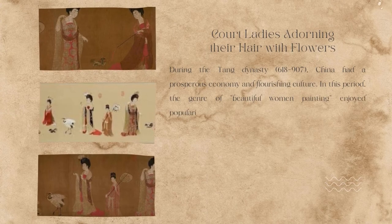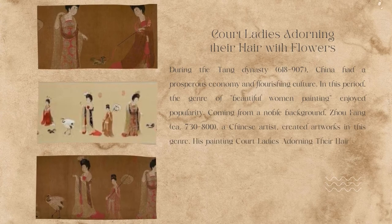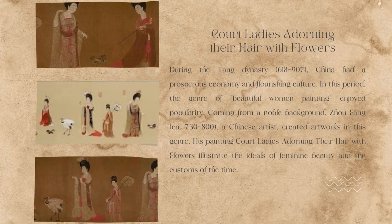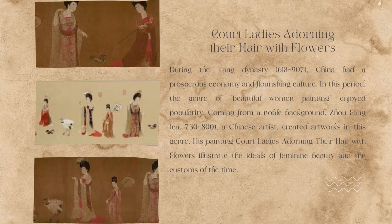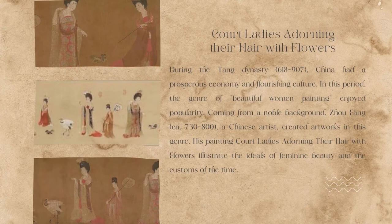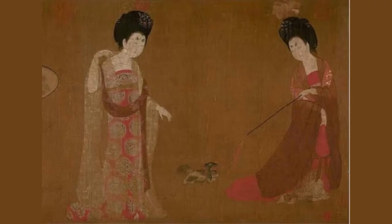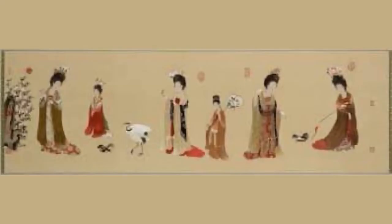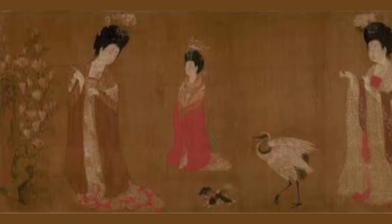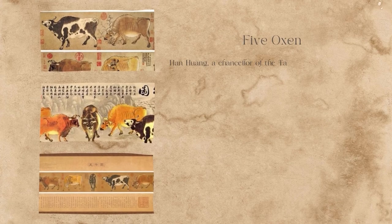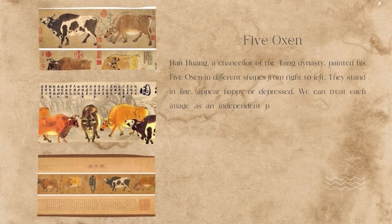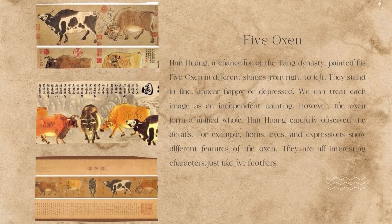The third is Court Ladies Adorning Their Hair with Flowers. During the Tang dynasty, China had a prosperous economy and flourishing culture. In this period, the genre of beautiful woman painting enjoyed great popularity. Coming from a noble background, Zhou Fang, a Chinese artist, created artworks in this genre. His painting Court Ladies Adorning Their Hair with Flowers illustrates the ideals of feminine beauty and the customs of the time.